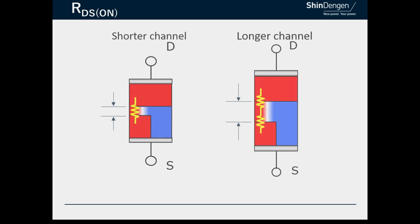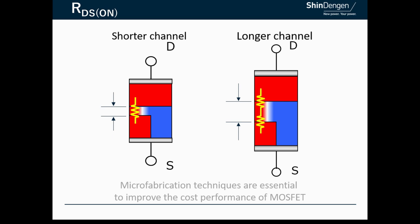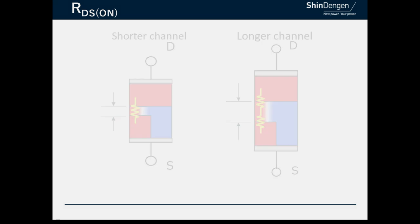Channel resistance can be reduced by making the channel length shorter. Also by reducing the size of the cells, more cells can be placed on the bare die. Therefore, minimizing channel and cell size through microfabrication techniques is essential to improve the cost performance of MOSFETs.